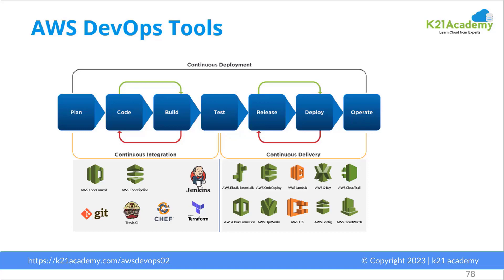So when you configure anything, you have to plan the application software you're developing, then developers will code it, and then someone will build it — a process called CI, continuous integration. Then testers will test it, and it will be released on a server already built by ops. That release and deploy process — creating a release and deploying on the servers — is called continuous delivery. The code and build part is continuous integration, including some planning and testing, whereas continuous delivery covers testing, deployment, release, and operations.